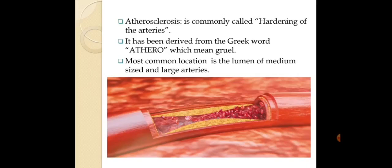The Greek word is 'athero', which means gruel — meaning a thin, lipid-rich porridge. The most common location is the lumen of medium-sized and large-sized arteries.